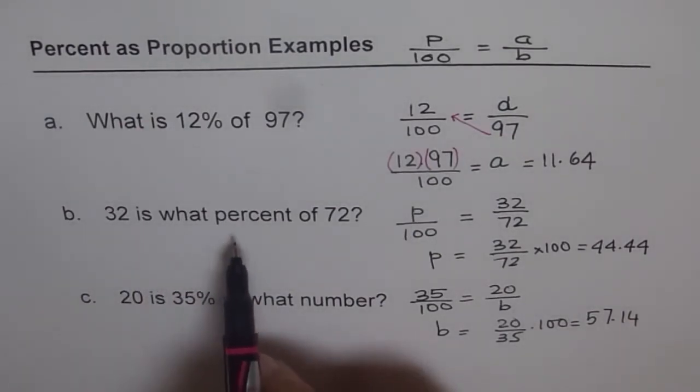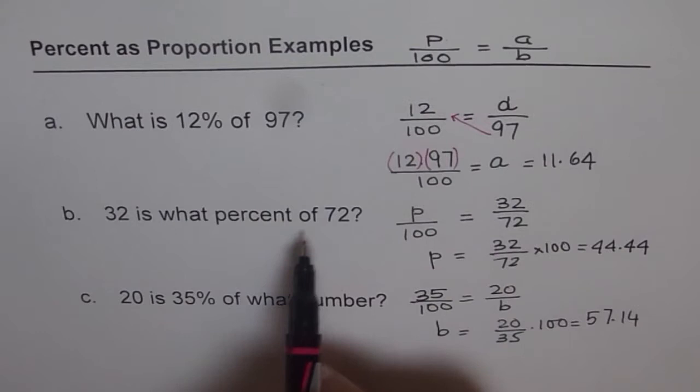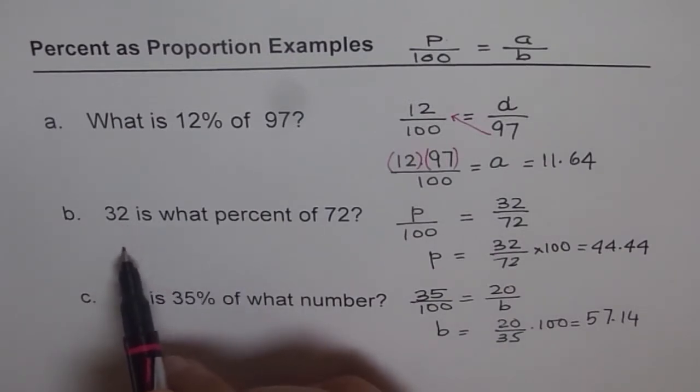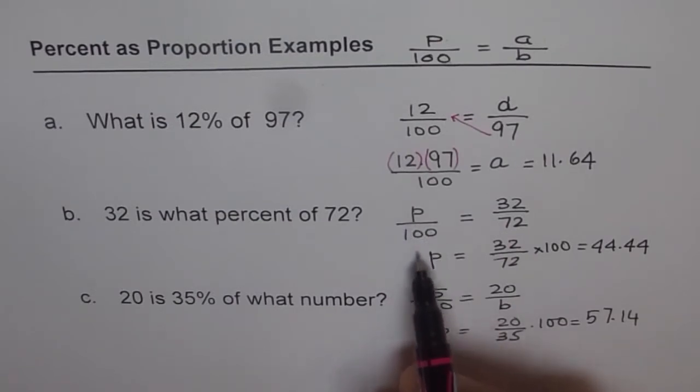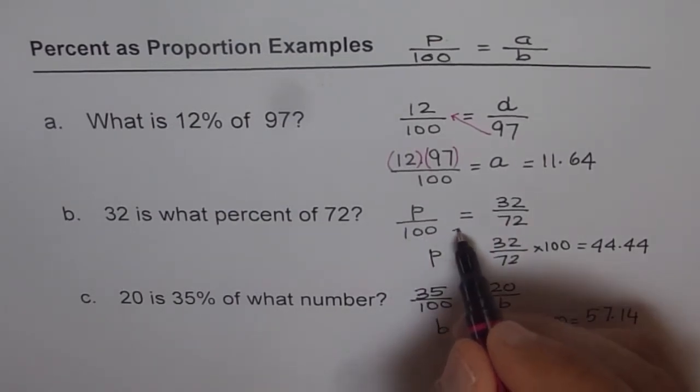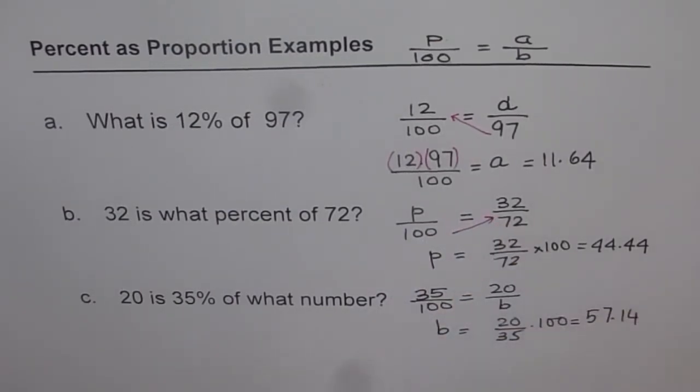32 is what percent of 72. So 32 over 72 is part over whole. And we need to find percent. We wrote p over 100, cross multiply, and then you get your answer.